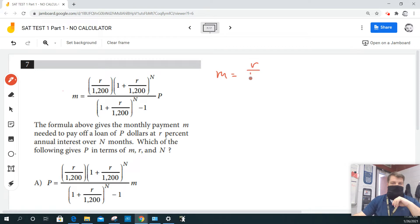M is equal to R over 1,200 times the quantity 1 plus R over 1,200, raised to the N, all over the quantity 1 plus R over 1,200, raised to the N minus 1. And I'm going to put an extra set of parentheses on all of that times P.